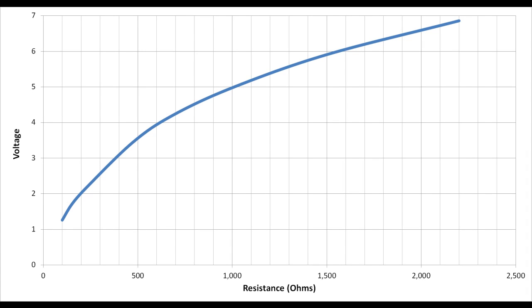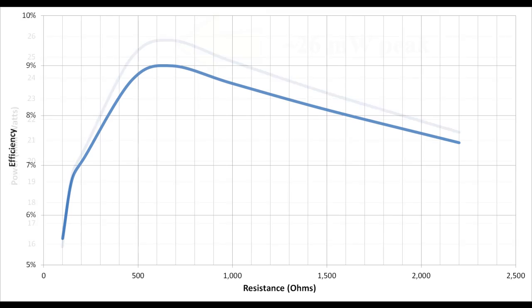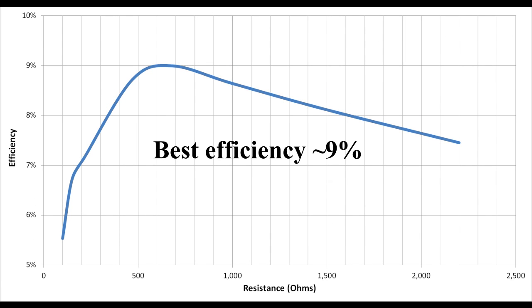Then I tested output voltage across different resistor values. I found that my maximum power was 26 milliwatts, which was about 9% efficient.